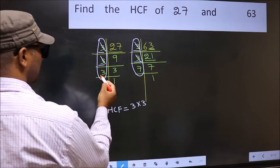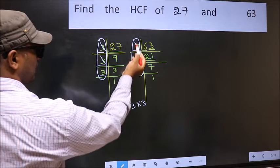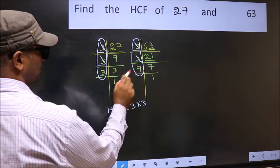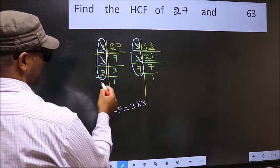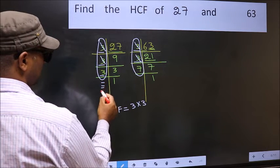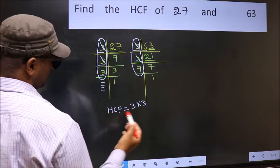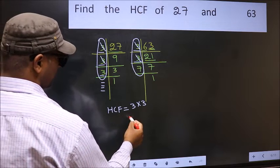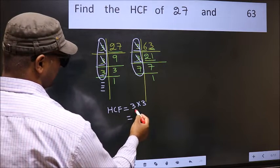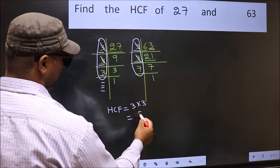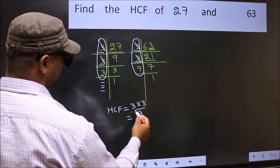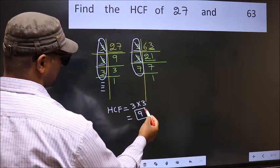Next number 3 — do we have 3 here? No. No more numbers are left. So our HCF is 3 times 3. 9 is our HCF.